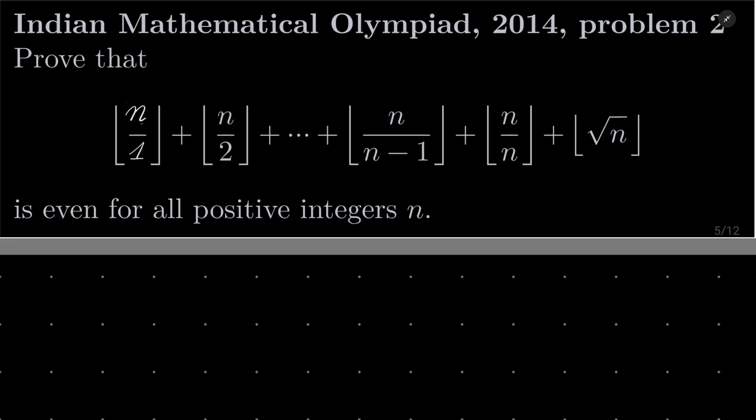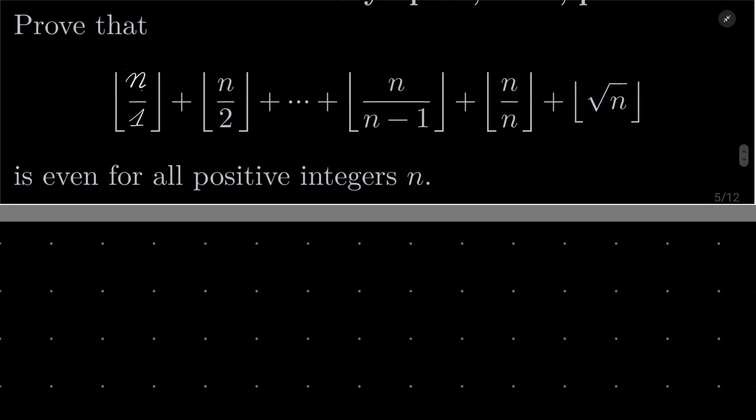Hello friends. In this video I'd like to solve the following problem from the Indian Mathematical Olympiad 2014, problem number 2. We want to prove that floor of n over 1 plus floor of n over 2 and so on, plus floor of n over n minus 1, plus floor of n over n, plus floor of square root of n, is even for all positive integers n. It's a nice problem involving sums.